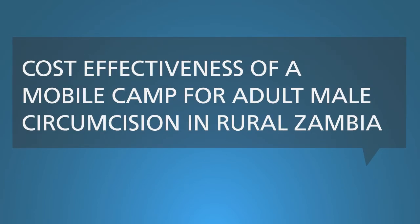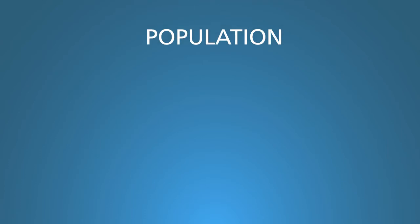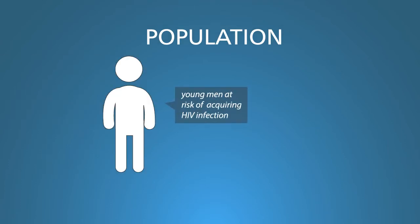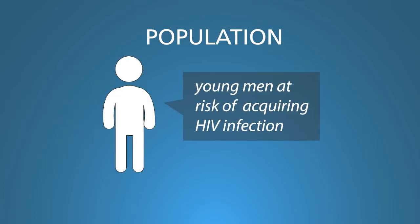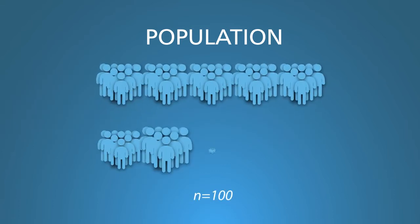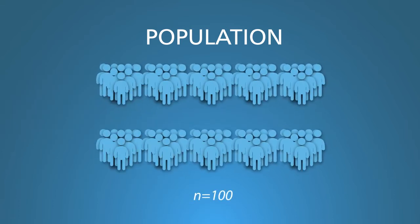Let's look at an example. Here's a basic decision tree to assess the cost-effectiveness of a mobile camp for adult male circumcision in rural Zambia to prevent HIV infection. This is a simplified version of the research question in segment number seven. You start with a description of the population — in this instance, young men at risk of acquiring HIV infection. Let's say we have 100 such men. It's easier to show and understand the calculations if you use a large round number like 100 or 1,000.